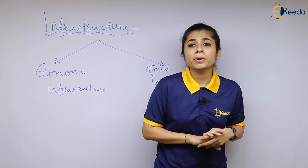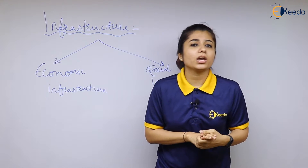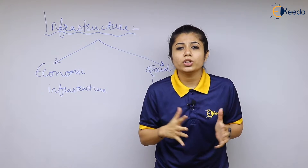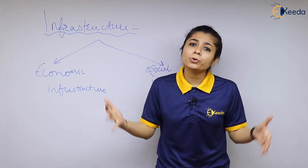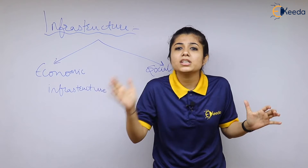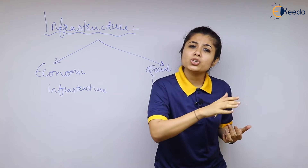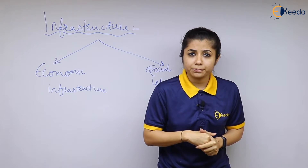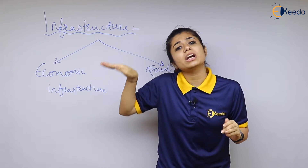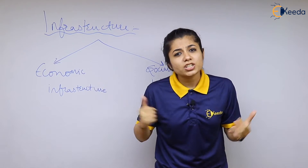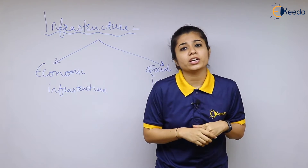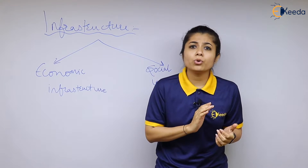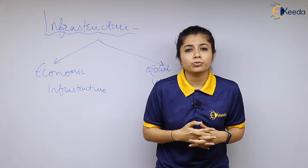What are the measures taken by government to improve the economic infrastructure? The very first measure is electrification in rural areas. Government is trying to provide electricity to as many people as possible so that a lot of different activities can be conducted. Apart from that, government is also trying to increase the level of electricity generation, because as the population is increasing, the requirement for electricity is also increasing, and therefore what needs to be done is increase the production of electricity.